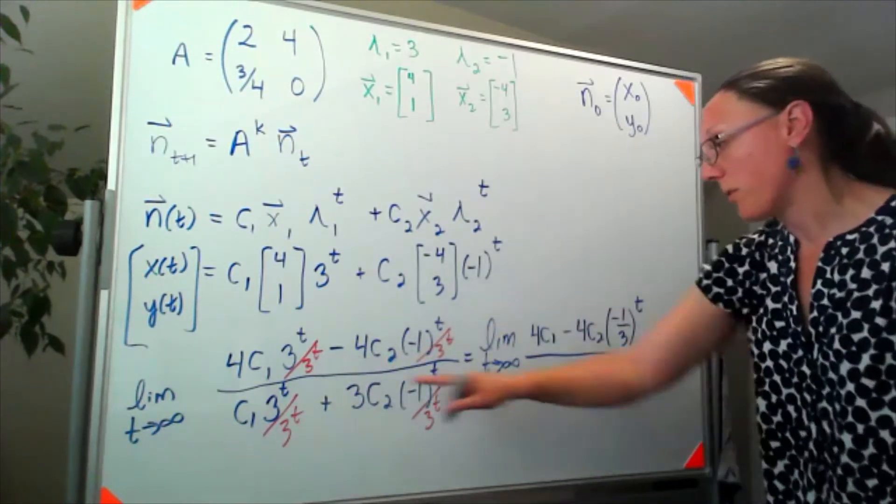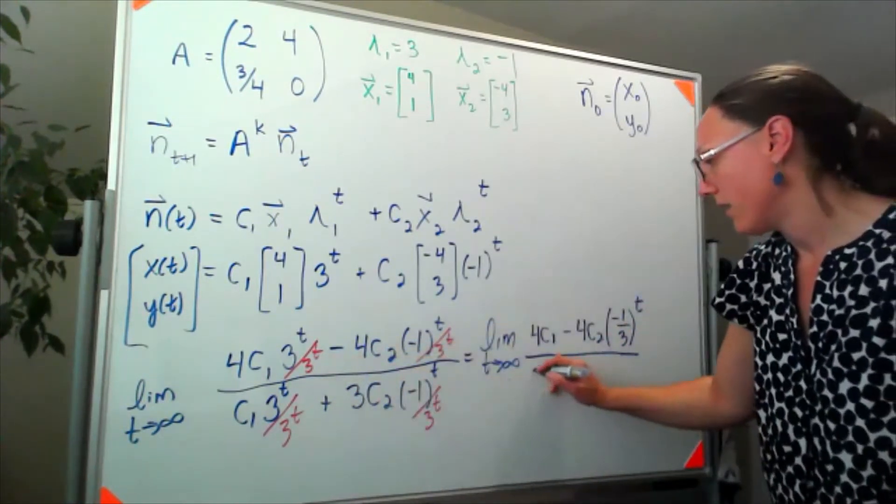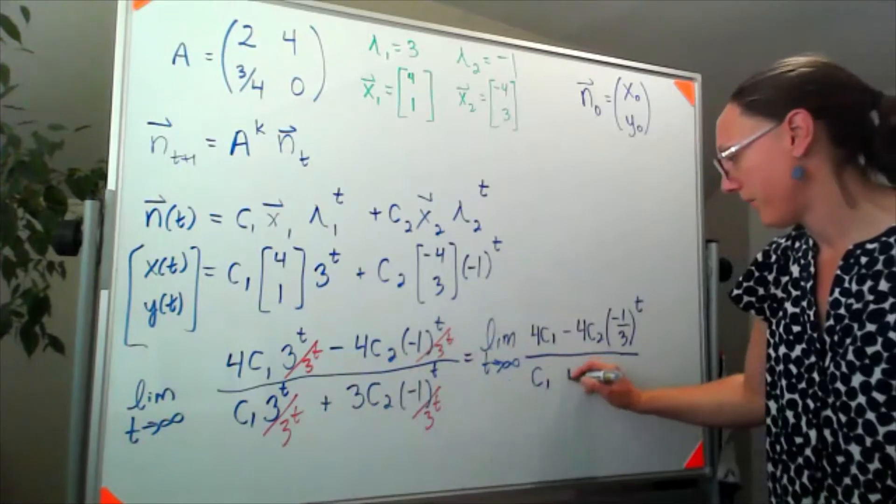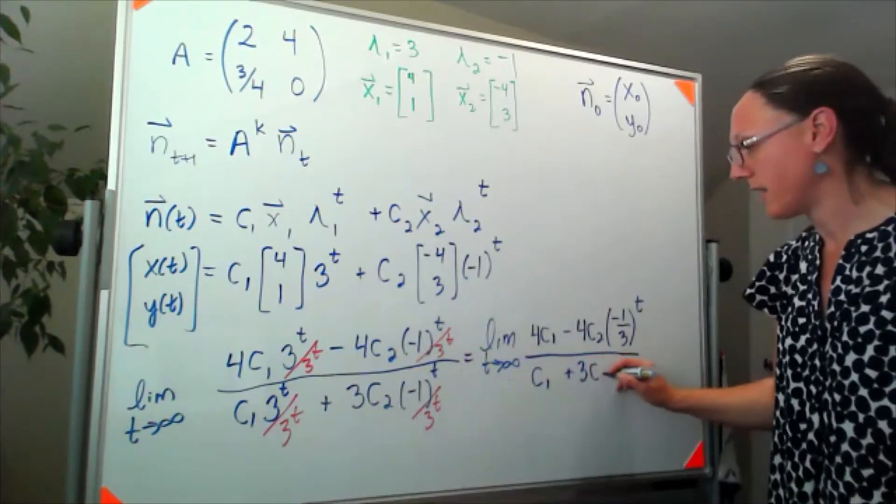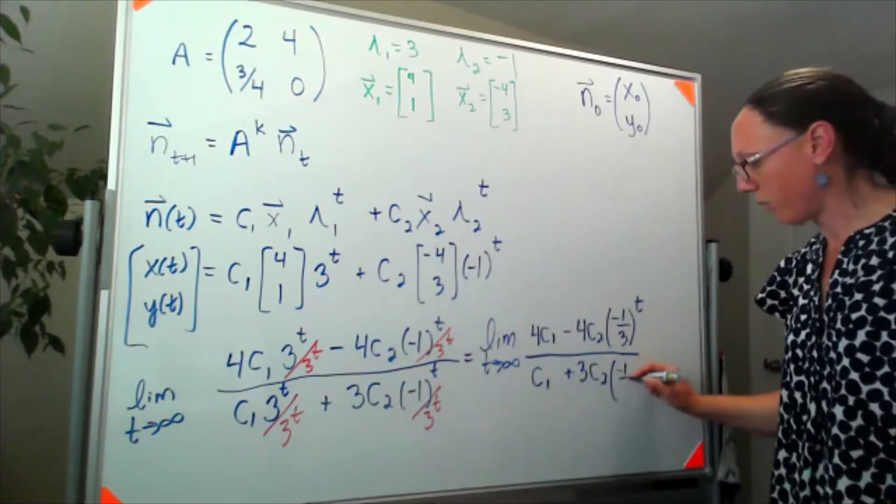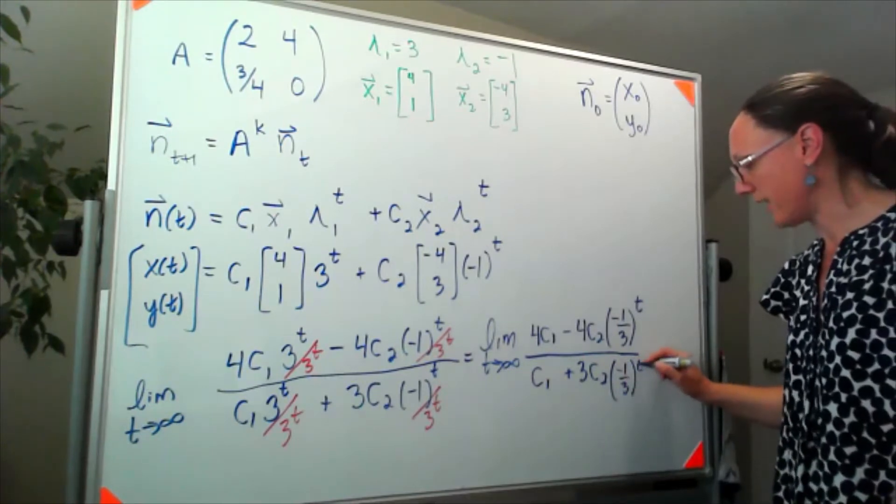And similarly, I'm going to clean up the bottom so that the bottom here looks like c1 plus 3c2 times negative 1 third to the t power.